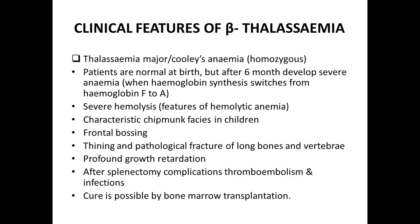The features of hemolytic anemia will be present: the classic triad of anemia, jaundice, and splenomegaly. In beta thalassemia major, patients have anemia, jaundice, and splenomegaly. Due to extramedullary hematopoiesis there is a characteristic chipmunk facies in children, frontal bossing, thinning and pathological fractures of long bones and vertebrae, profound growth retardation, and after splenectomy complications like thromboembolism and infections are frequent.